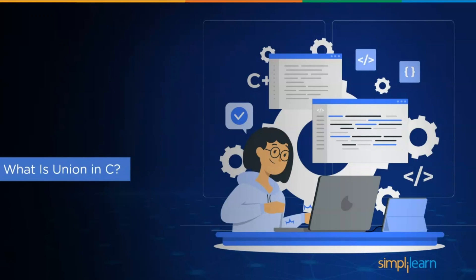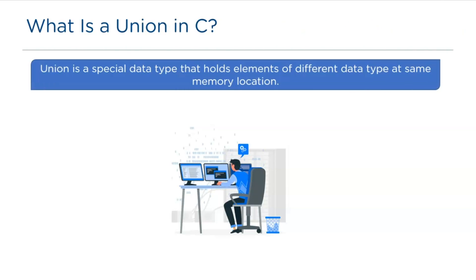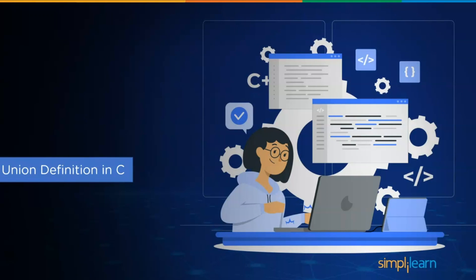Now, let's begin by understanding what a union is in C. Union is a special data type that holds elements of different data types at the same memory location. The concept of structure and unions are the same. However, the only difference is in terms of storage space and the keyword. So, for union declaration, we use the keyword union.